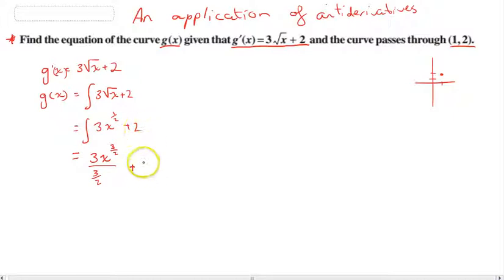And this one should be pretty straightforward. Now, don't forget there's going to be a plus c as well. Now, we should be able to tidy this up a little bit. 3 divided by 3/2. Feel free to use your calculator here. 3 divided by 3/2 is the same as 3 times 2/3, which is 6/3, which is 2. So 2x^(3/2) + 2x + c. That should be our g(x).